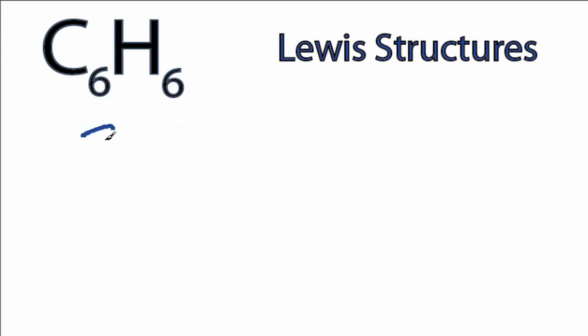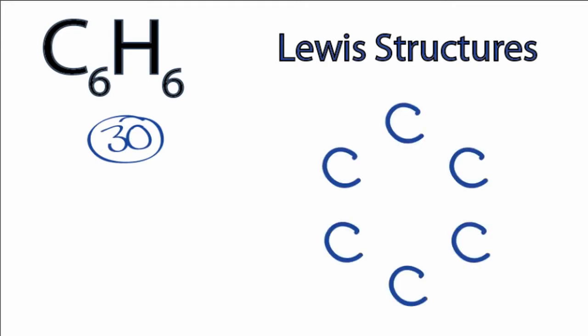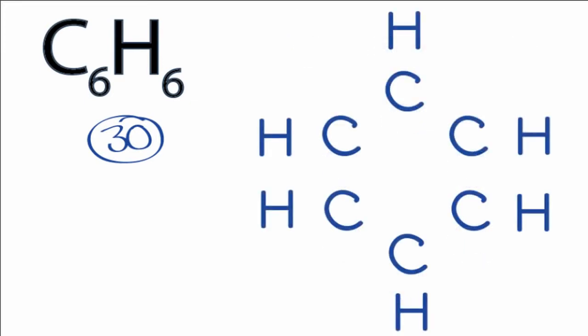So we have a total of 30 valence electrons to work with. For benzene, we're going to put the carbons in a ring structure. Then we'll put the hydrogens outside of the carbons. So we have our skeleton structure.